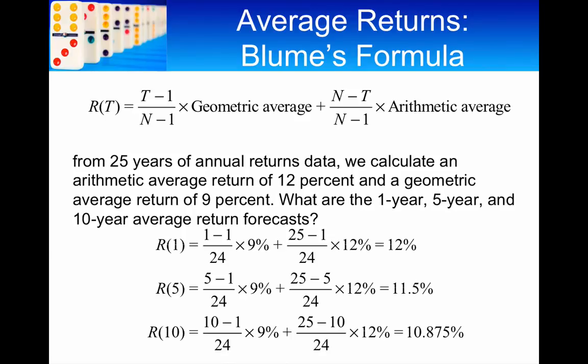So, in this particular case, you can see that you've got 25 years. N is the number of years. And T is the average return forecast over, say, 1-year, 5-year, or 10-year. Now, if you look at this, so, if you've got 25 years of data, in both cases, N-1 means you've got 24 in the denominator. And then you've just got a different weighting for the arithmetic and the geometric return.